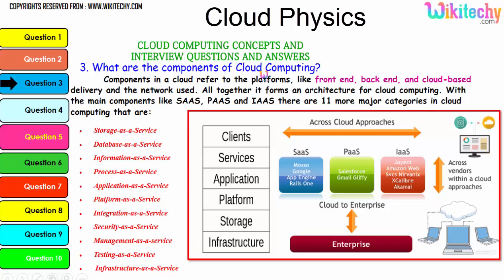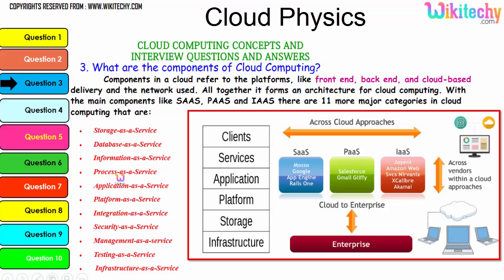Now let's talk about the components of cloud computing. Components in a cloud refer to platforms like front-end, back-end, cloud-based delivery, and the network used. Together they form an architecture with the main components: Software as a Service, Platform as a Service, and Infrastructure as a Service. There are 11 major categories in cloud: storage as a service, database as a service, information as a service, process as a service, application, platform, integration, security, management, testing, and finally infrastructure. These are additional services associated with the three major services to form cloud computing.